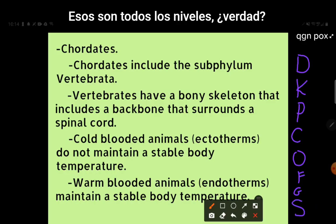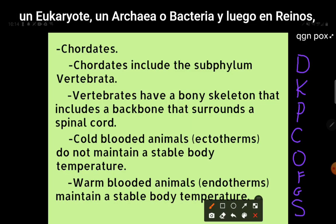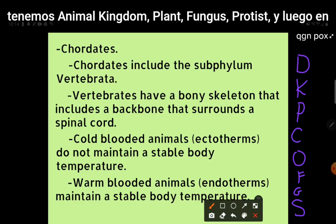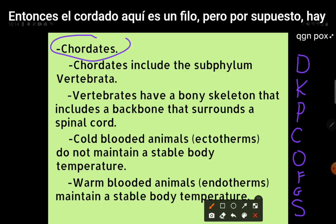Those are all of the levels. At the domain level, there's only three: you are either a eukaryote, an archae, or bacteria. Then in kingdoms, for eukaryotes, we've got animal kingdom, plant, fungus, protist. And then in phylums, that's what we're talking about here. The chordate is a phylum.